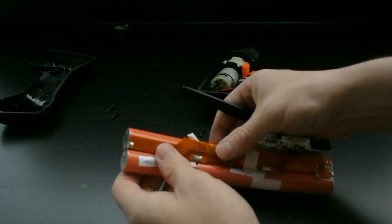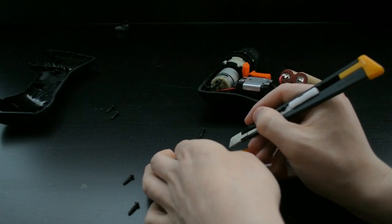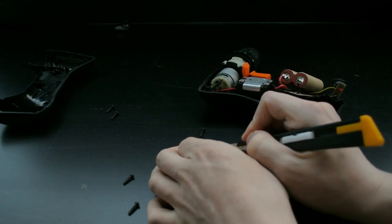Now that we've gotten rid of the heat shrink tubing we're going to take apart the old laptop battery so that we can get two cells that we're going to put inside the drill.